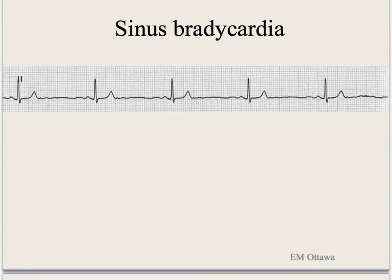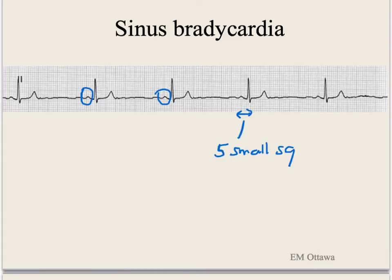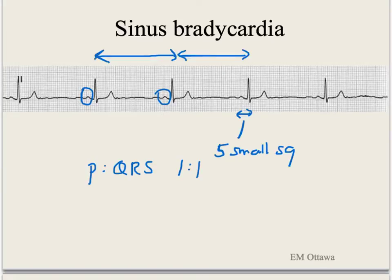The first rhythm is sinus bradycardia. The SA node is generating a slower than 60 beats per minute rhythm. Since it comes from the SA node, there is a P wave. The PR interval is normal — less than 5 little squares. There is a P before each QRS and a QRS after every P. The RR interval looks regular, and the QRS is narrow.